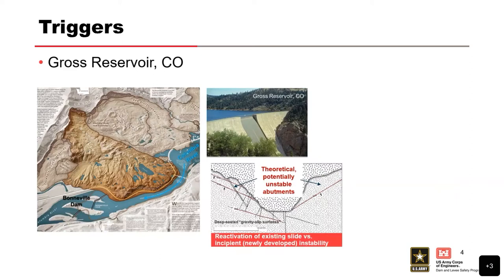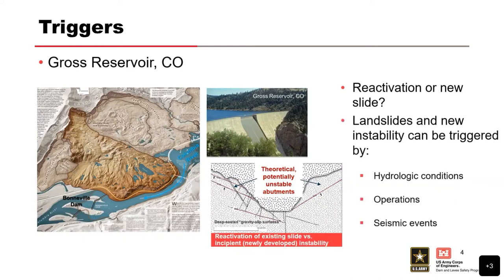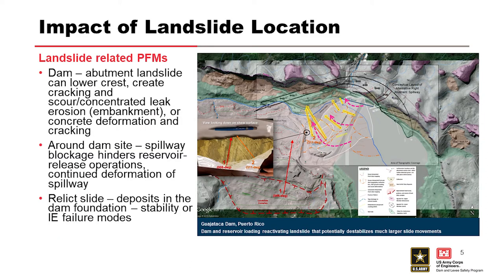Here are the theoretical unstable abutments on the right. You can see the dipping strata upstream of the reservoir. This would be a reactive or a new slide. The landslide and new instability can be triggered by changes in hydrostatic conditions created by a dam — the raising of the reservoir, the operations of the dam, a seismic event, precipitation, or changing of the weight on the slope. All these can happen in combination, so you have to look at many things when evaluating the triggering of slides.